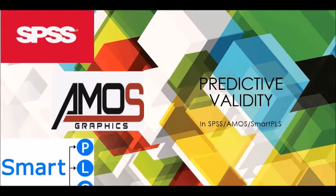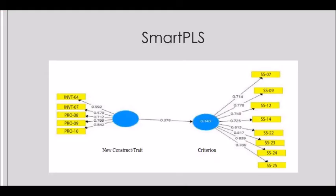You can also use AMOS or SmartPLS. If you are interested in using SmartPLS, you will draw a simple path diagram in which you place your new construct as the independent variable and your innovative performance or criterion variable as the dependent variable. You then run the path analysis in SmartPLS and check the path coefficient between your new construct and the criterion. If the path coefficient is significant, you can claim significant evidence of predictive validity.